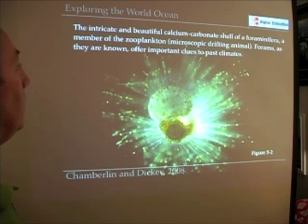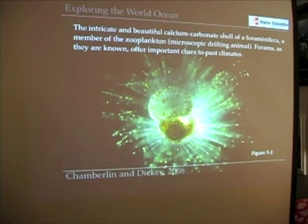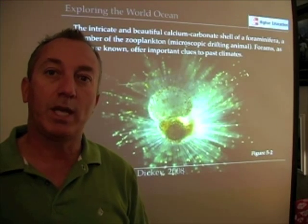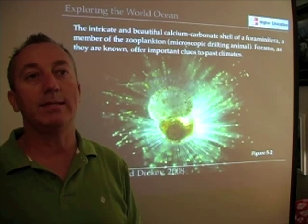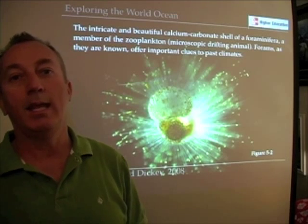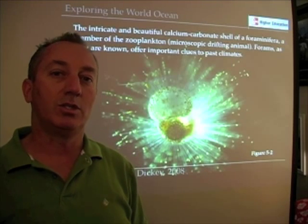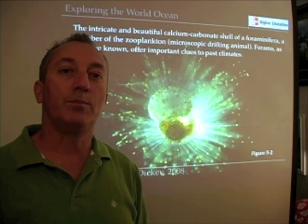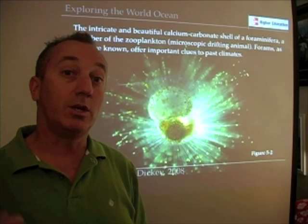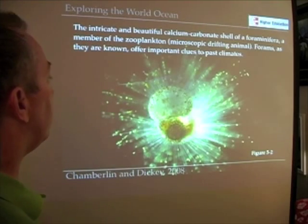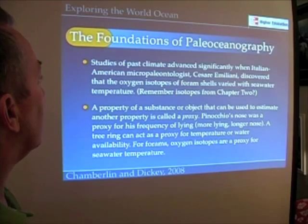As it turns out, these foraminifera — or forams for short — their shells and the species of foraminifera change depending on temperature. So with different temperatures in the ocean, we get different kinds of species. That really shouldn't be such a stretch to imagine: different plants and animals occur in different places on Earth depending on temperature, and forams in the ocean work the same way.